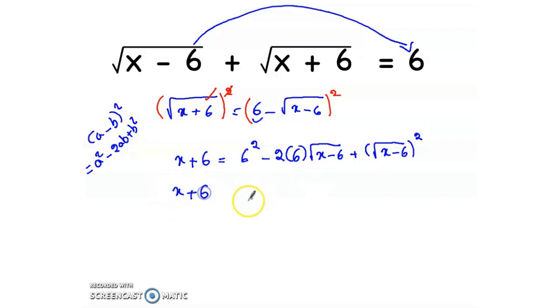x + 6 = 36 - 2 times 6 is 12, √(x-6) + x - 6. Now drop x.